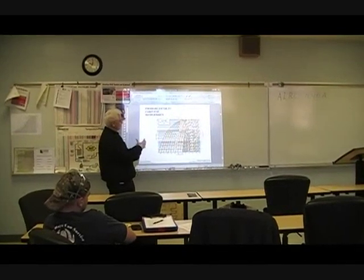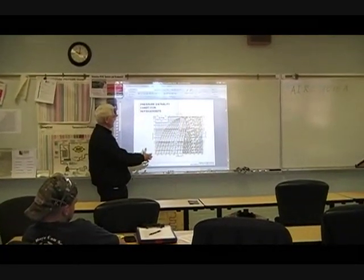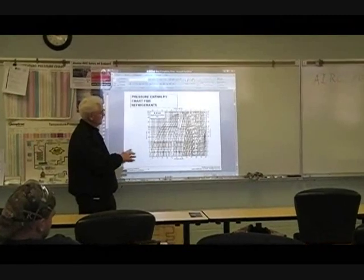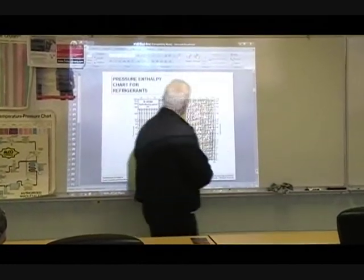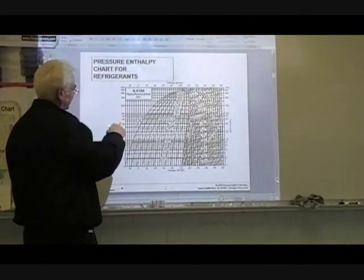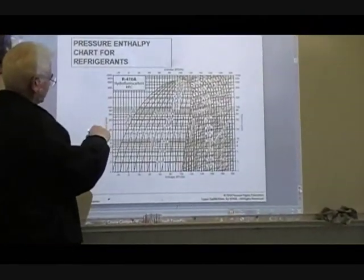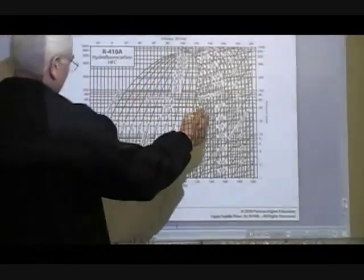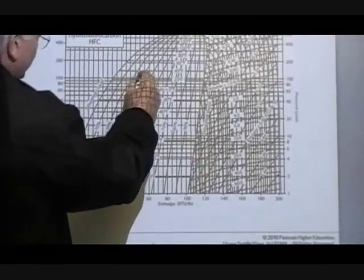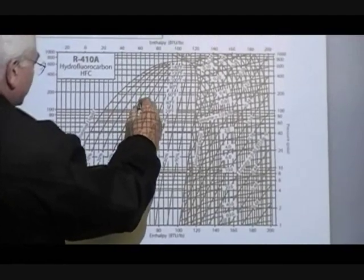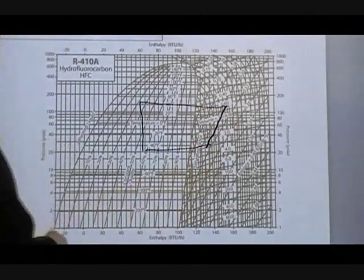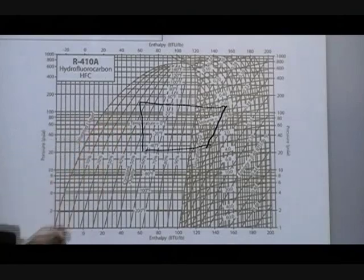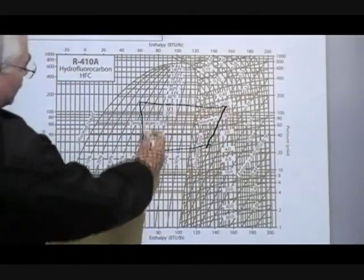Once you understand the vapor compression refrigeration cycle — what's happening in the system and how it relates to the chart — it's not that difficult to understand the chart. At any given time, you're going to be looking at a rectangular box. If you're asked to plot a particular refrigeration system on the pressure-entropy diagram, this is always what you're going to be looking at.